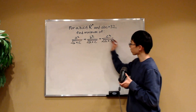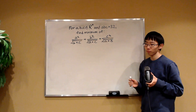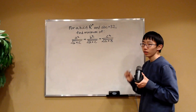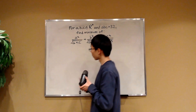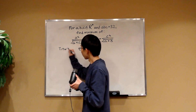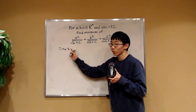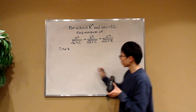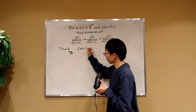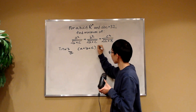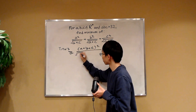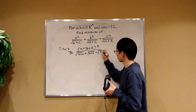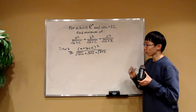Firstly, when I see square terms, I might think of the Cauchy-Schwarz inequality. But there is a more direct consequence of Cauchy-Schwarz that we can apply directly to this expression — it's called Titus' Lemma. By Titus' Lemma, we can deduce that this entire expression is greater or equal to (A plus B plus C) all squared, divided by the square root of (B+C) plus the square root of (A+C) plus the square root of (A+B).